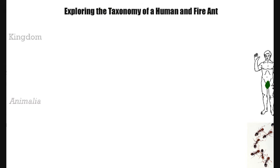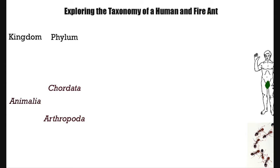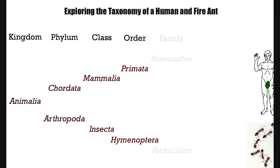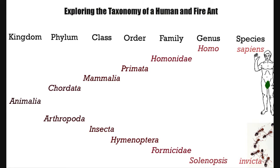Humans and ants both belong to the kingdom Animalia, but diverge at their phyla — with humans belonging to Chordata, the chordates or animals with backbones, and ants belonging to Arthropoda, the arthropods. Proceeding down each level of classification, the nomenclature becomes more and more specific. The final two levels, genus and species, create the organism's scientific name.